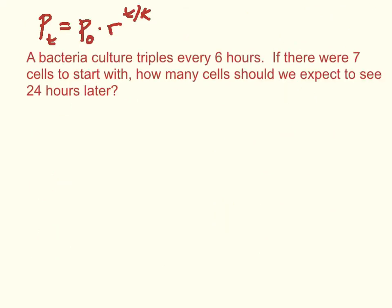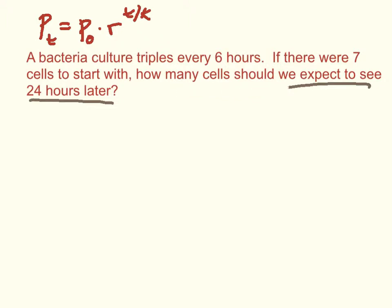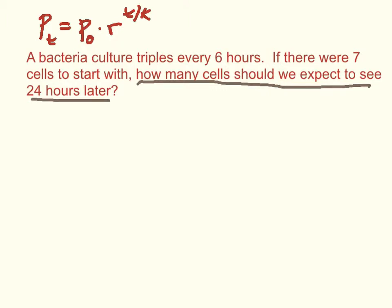Here is an example we want to model with an exponential equation: a bacteria culture triples every six hours. If there were seven cells to start with, how many cells should we expect to see 24 hours later? We see the question being asked is how many cells after 24 hours, and we usually want to jump right to answering that. But we cannot answer this question until we first get our model — let's do that first.